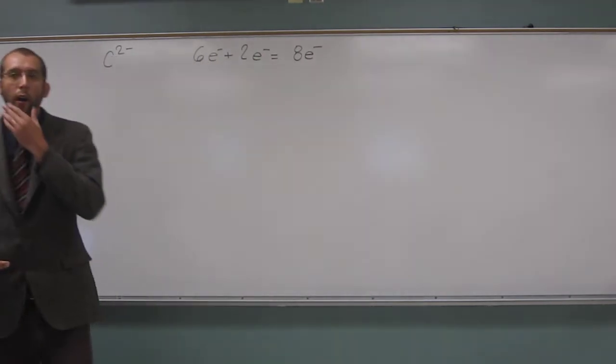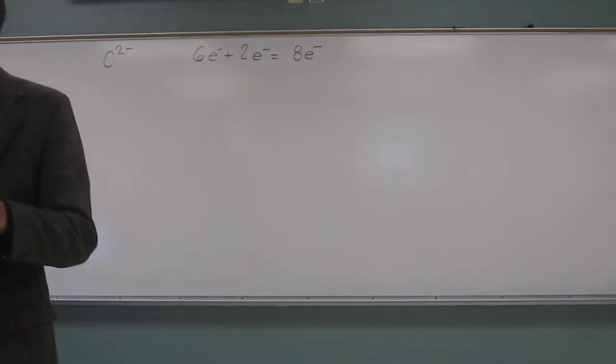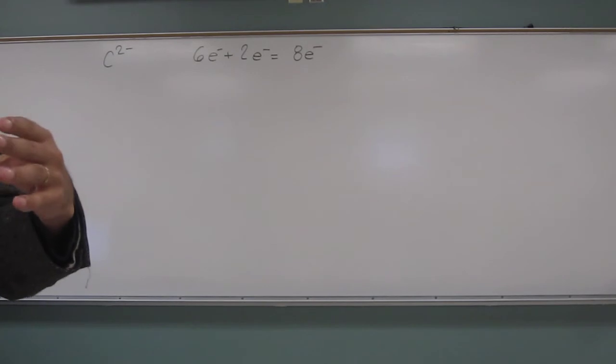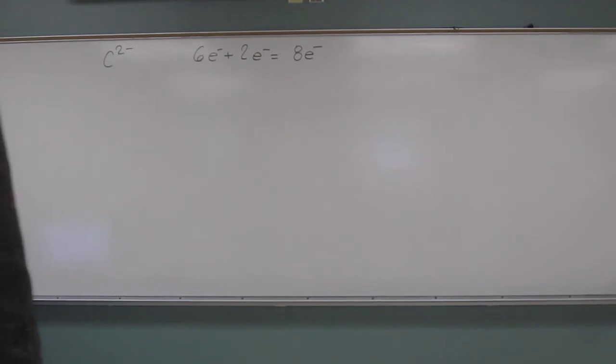So when we're doing our electron configuration, we have to have a total of eight in those little superscripts.